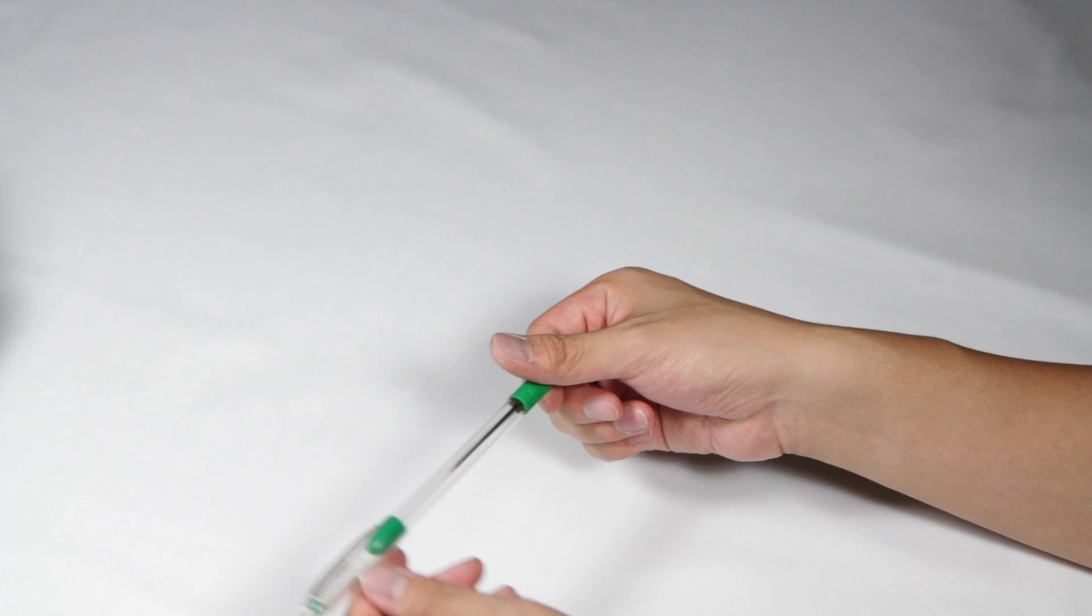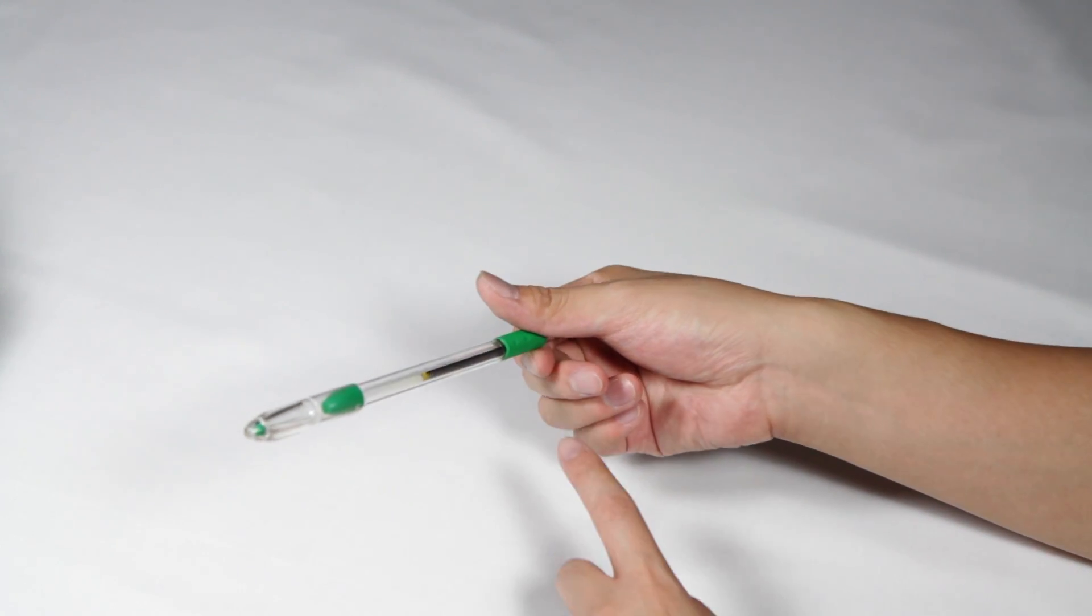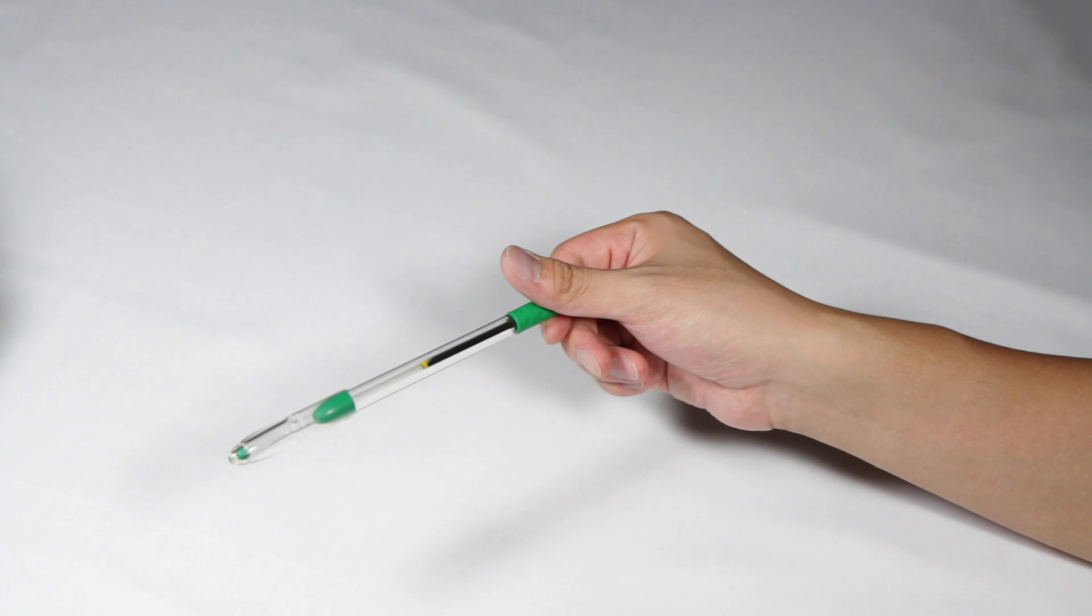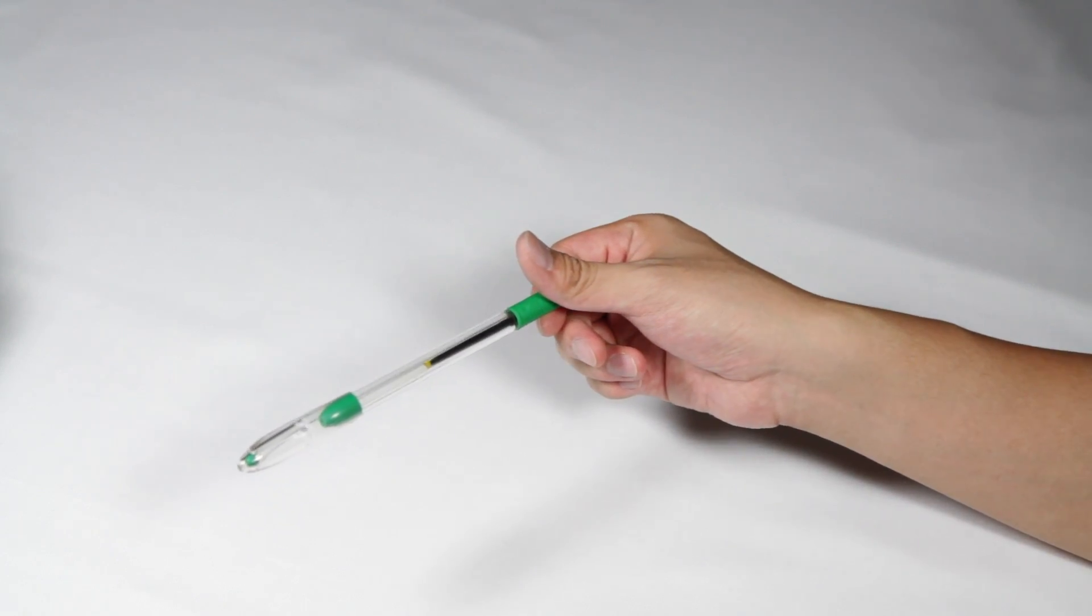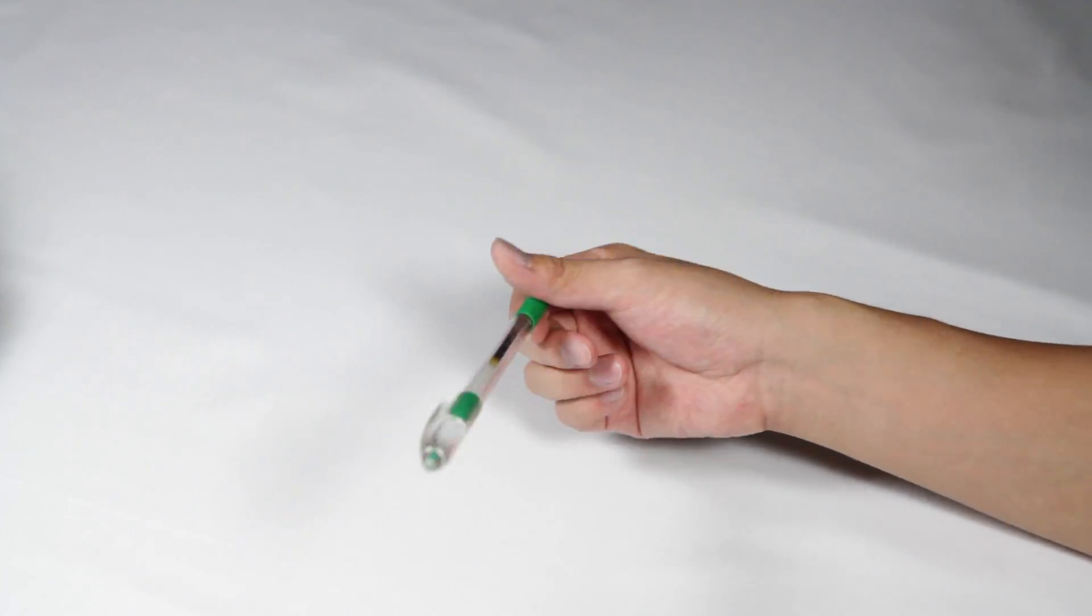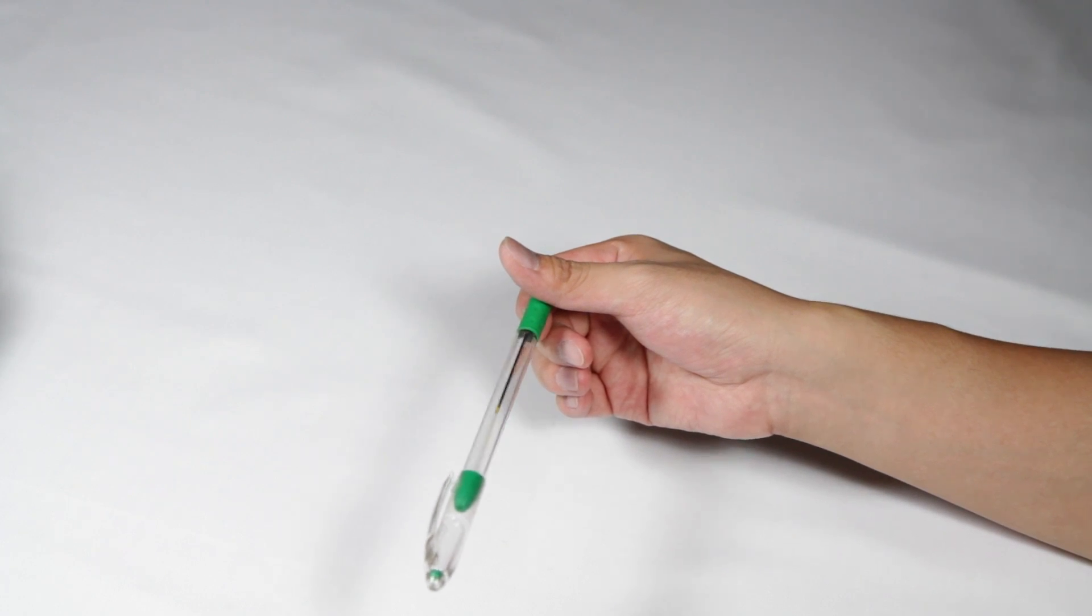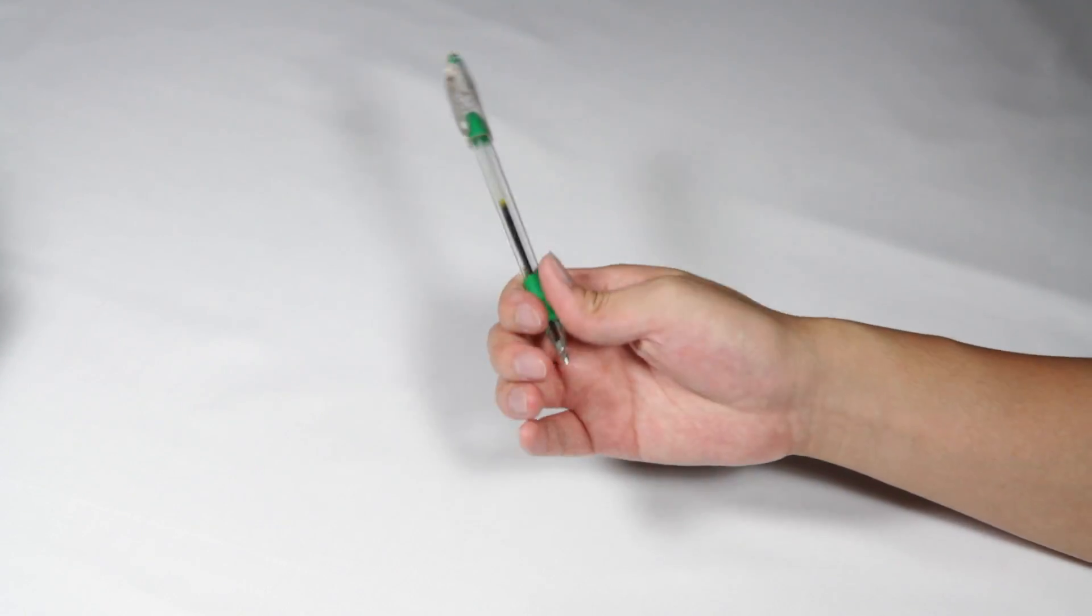But instead of letting it go all the way down, notice where my index and middle finger are relative to each other. As the pen is swinging down, it will have the tendency, if you're holding your hand palm side anyway, it will have the tendency to fall into this finger slot just like that.